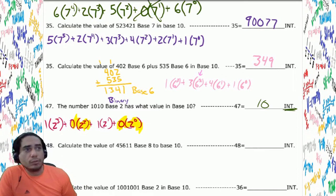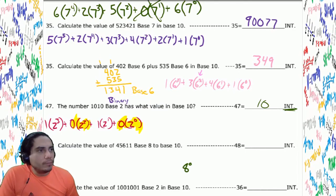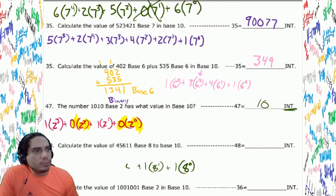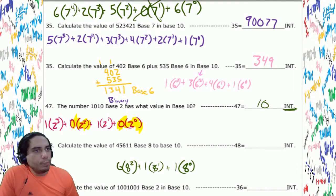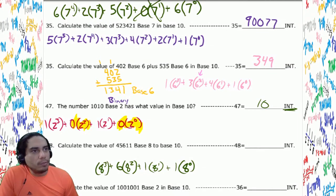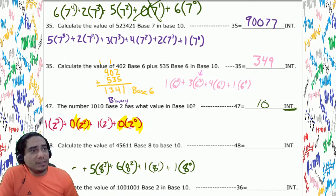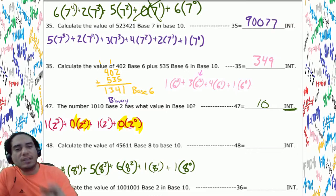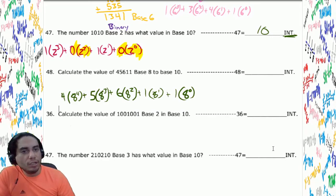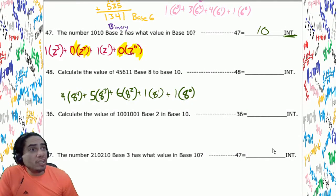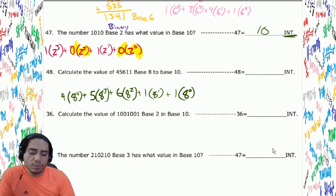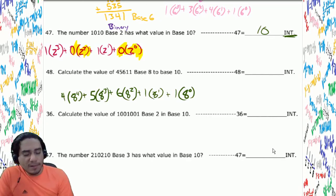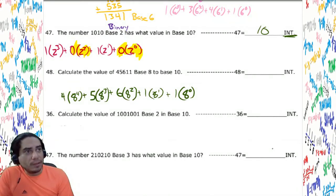Next: a base 8 number — 4 5 6 1 (base 8). Setting up place values: 8 to the zero times 1, 8 to the first times 1, 8 to the second times 6, 8 to the third times 5, 8 to the fourth times 4. On the calculator: 8, enter, 4, y-to-the-x, times 4; 8, enter, 3, y-to-the-x, times 5, plus; 8 squared times 6, plus; then 8.